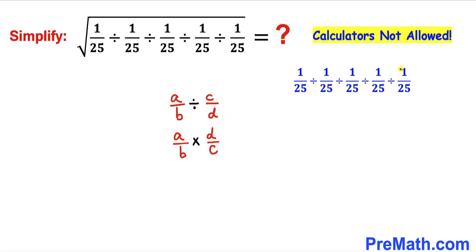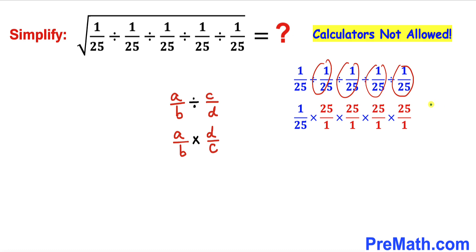As you can see in this next step, I converted this division into multiplication and this has been flipped over. Now I am going to apply this concept on all of these fractions. As you can see in this next step, these division signs have been transferred into multiplication and these have been flipped over. Now we can see this 25 and this 25, this is gone, so we ended up with three of these 25s.